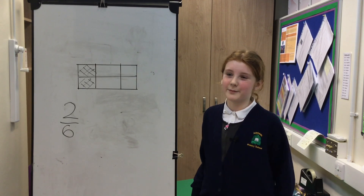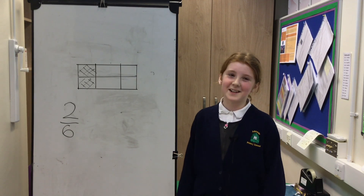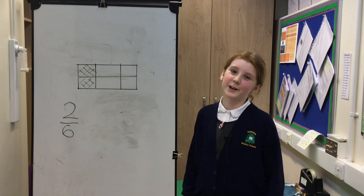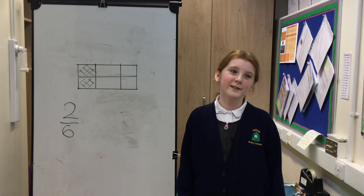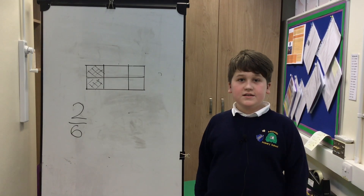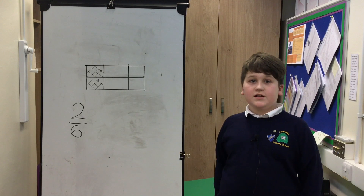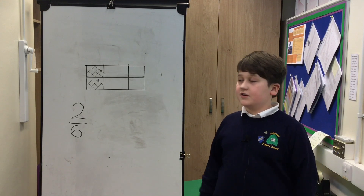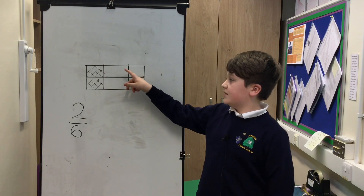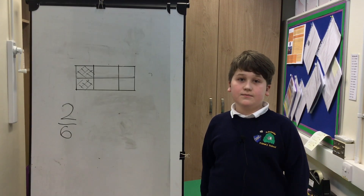The denominator is how many parts the whole is divided into, and the numerator is how many parts we have. You can see the fraction as a multiplication array. For example, you could do 2 times 3 or 3 times 2, which equals 6.